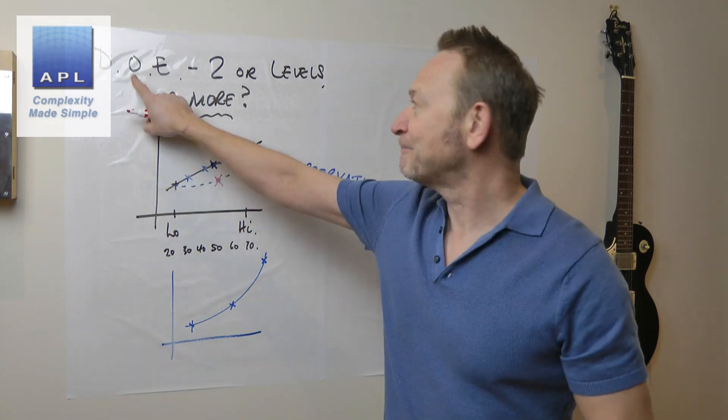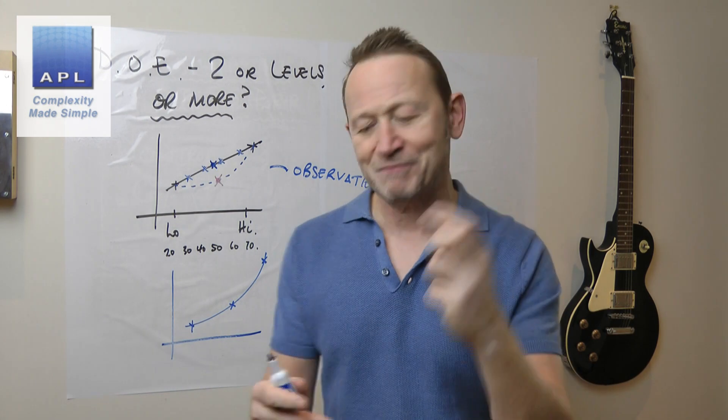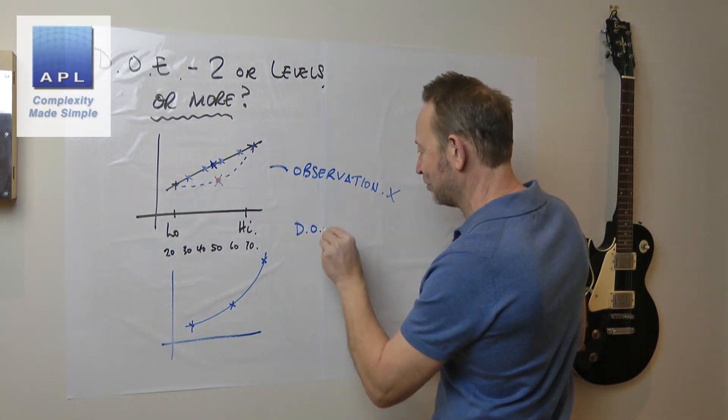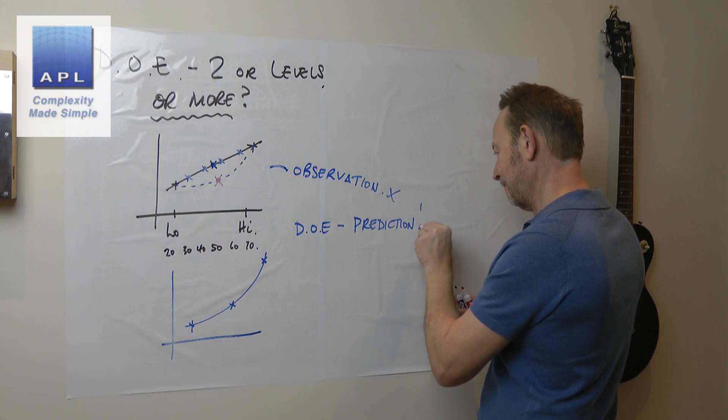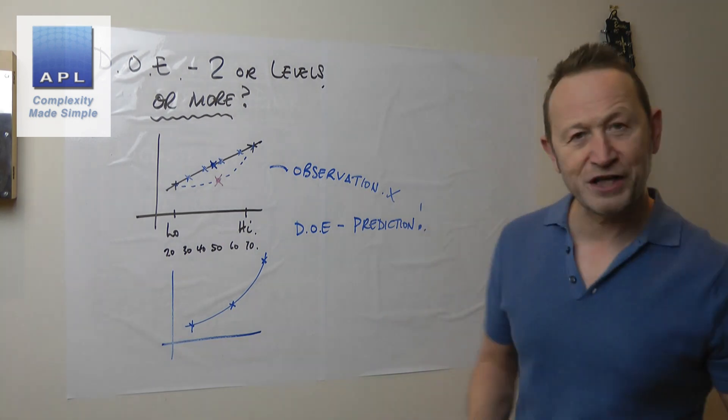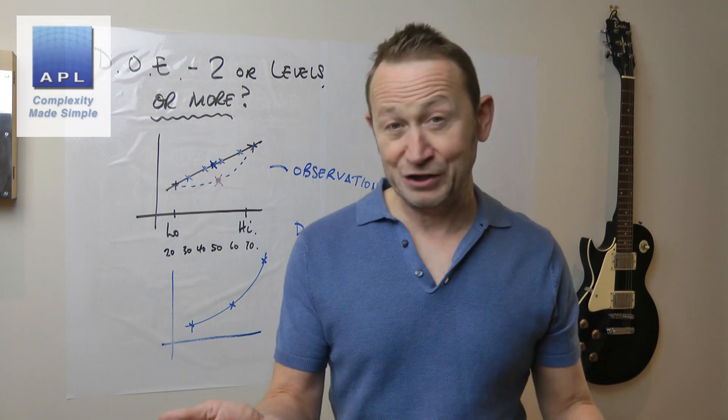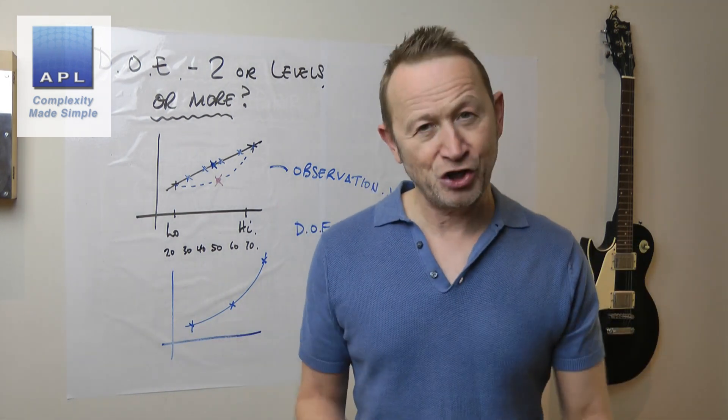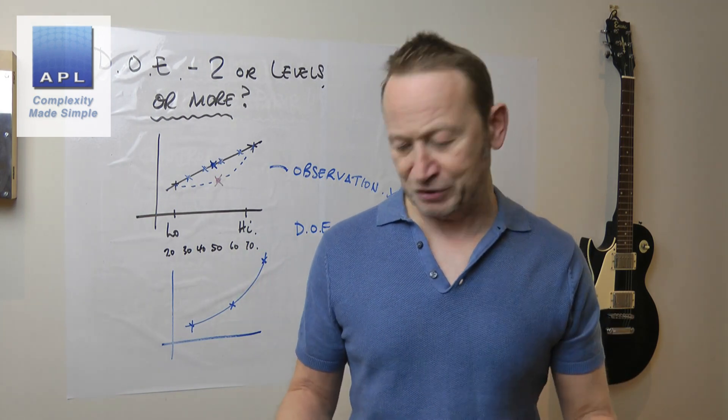What we're talking about though is design of experiments. Let the maths make a prediction. Because what DOE is going to do is not about observation. It's about prediction. And if I'm going to predict a straight line, I only need two points. If I'm going to try and create maths for a curved line, I really only need three points.